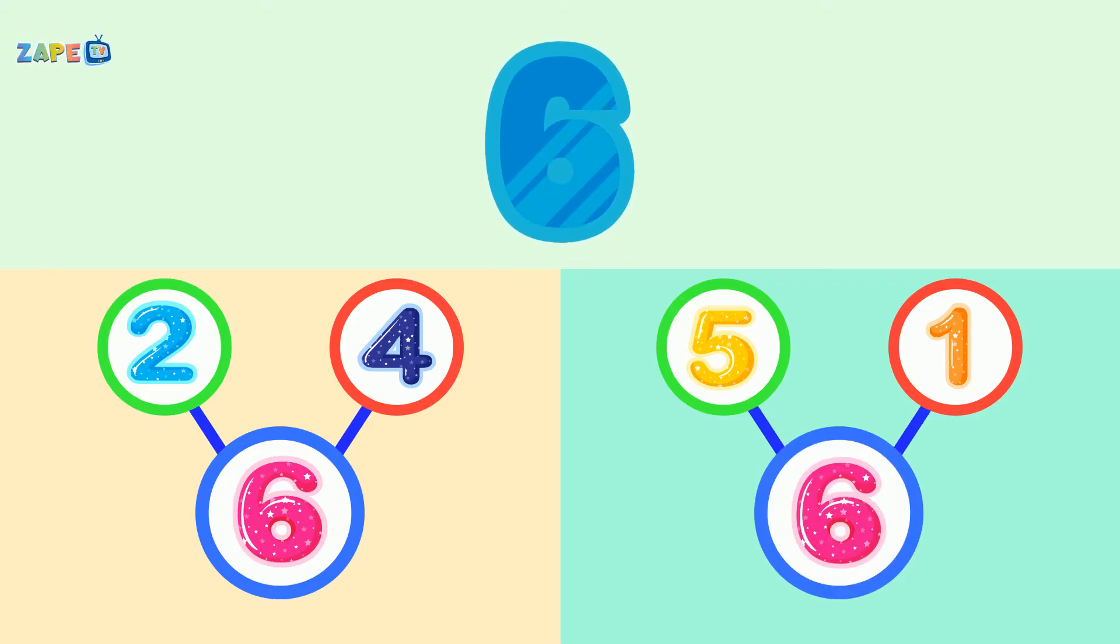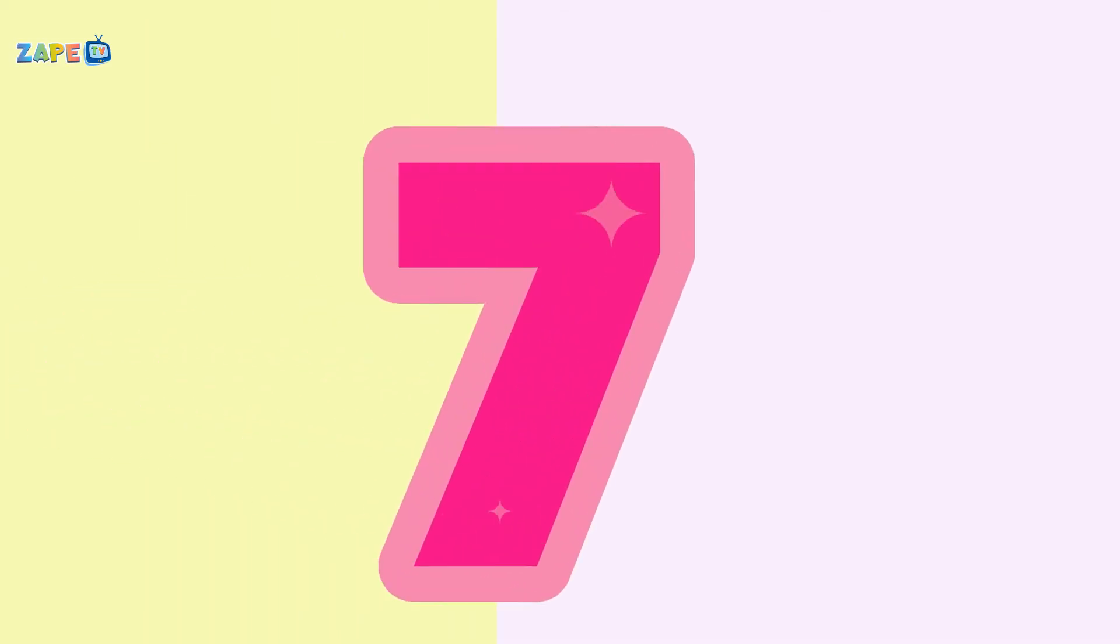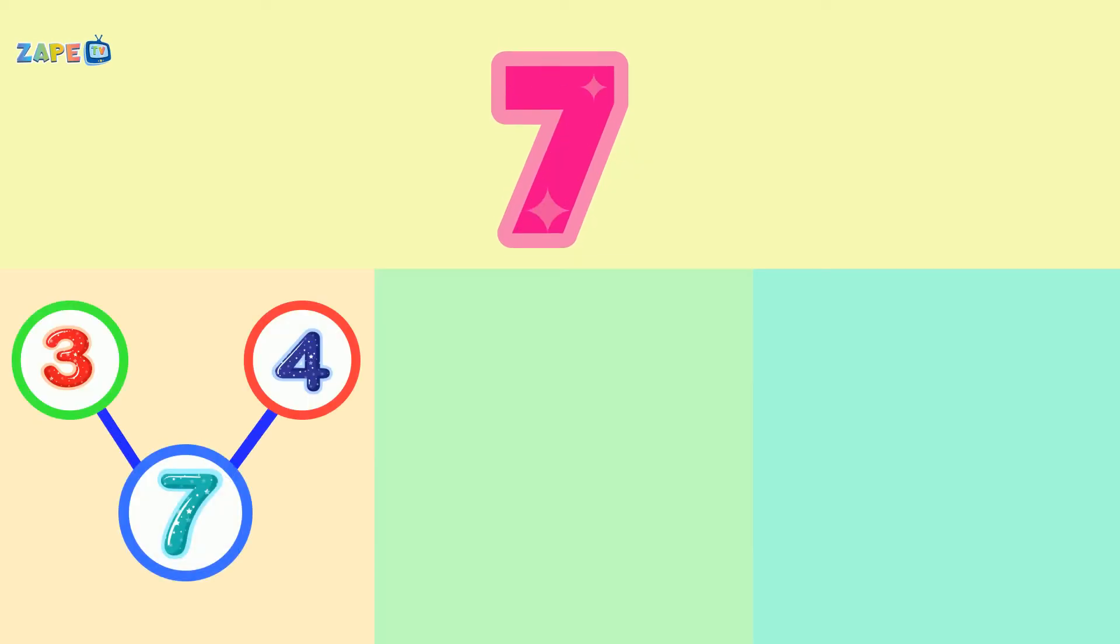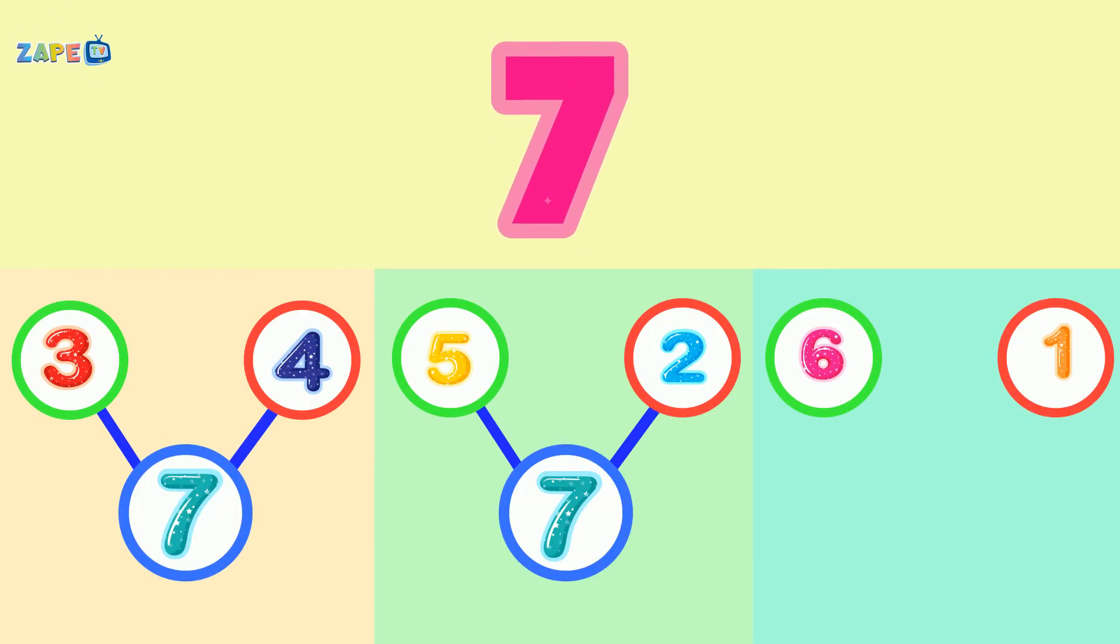Now try seven, let's see the parts. You can break it down into three and four, smart! Or how about five and two, or six and one? Number bonds are awesome, so come and get some.